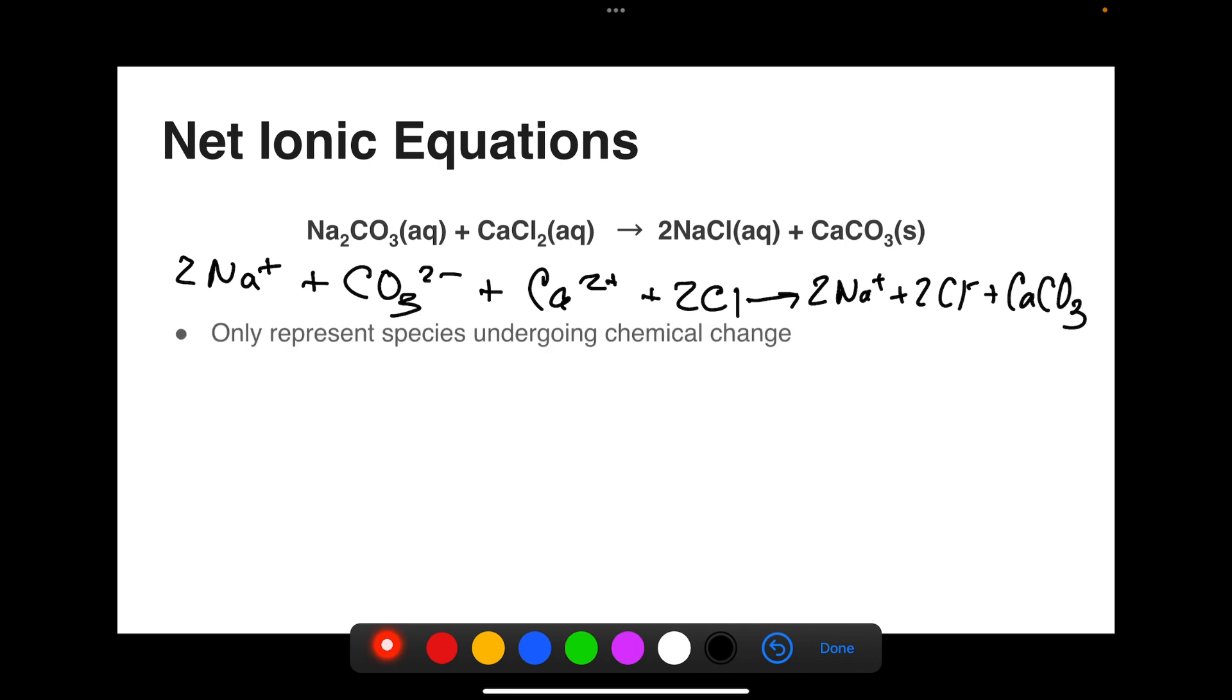For a net ionic equation, we actually want to only represent the species undergoing a chemical change. Therefore, we're going to eliminate spectator ions. A spectator ion is any ion that appears in exactly the same way on both sides. So for instance, I have two sodiums in the reactants and two sodiums in the products. That means nothing happened to those sodiums. They were there in the beginning, and they're still there unchanged at the end.